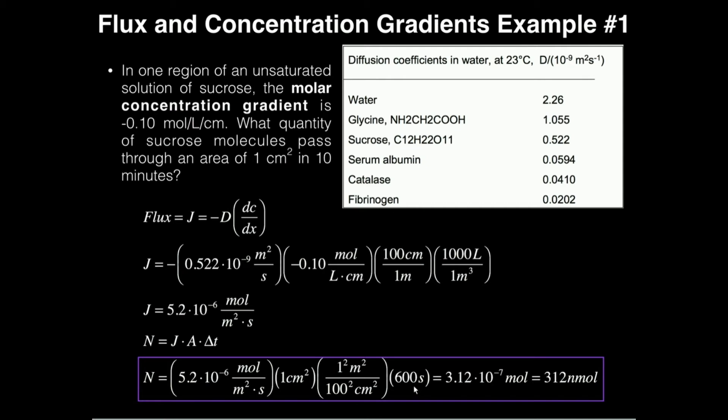Now 10 minutes in seconds is 600 seconds. I would just take the number of minutes and multiply by 60. So 600 seconds. Now the reason I have this conversion factor right here is because I don't want these square centimeters. So I have to convert these square units to the square meters.